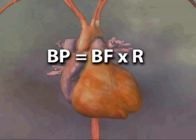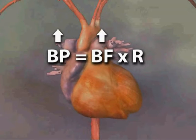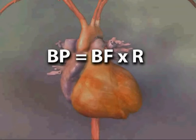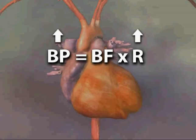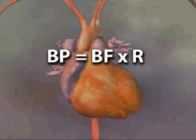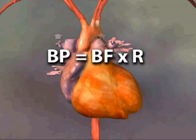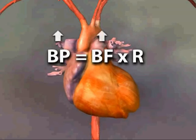If rate or volume increases, blood pressure goes up. Likewise, increased resistance raises blood pressure, and when arteries downstream from the heart constrict over time, high blood pressure or hypertension damages many organs. First, the heart works harder.